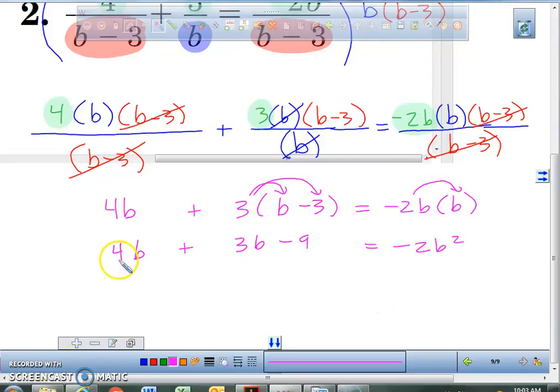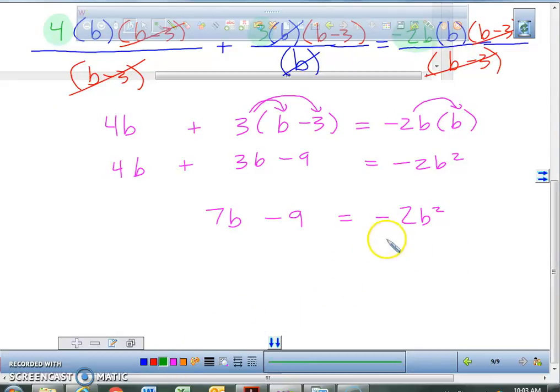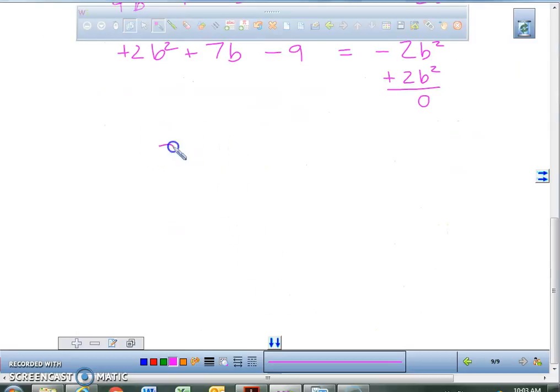Now, at this point, we can take the 4B, we can add it to the 3B, and we get 7B. What type of equation do we have here? We have a quadratic because something's being squared. So what are we going to do with this negative 2B squared? We're going to bring it over, add it to both sides of the equal sign. So here's our final quadratic equation: 2B squared plus 7B minus 9 equals 0.